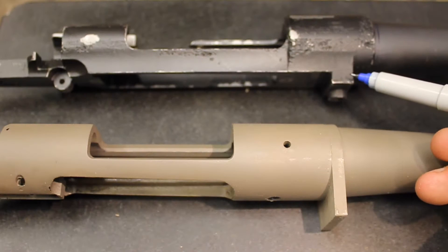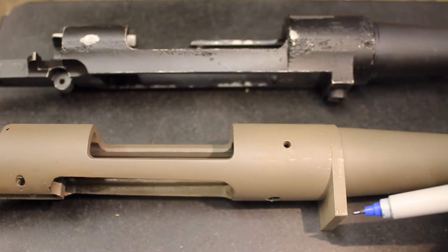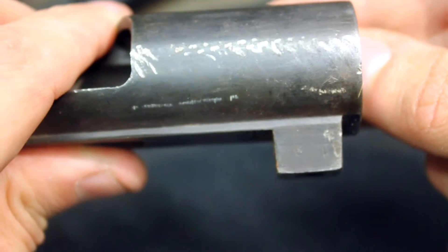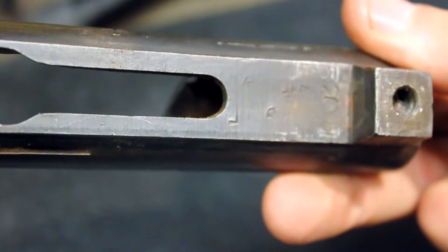Some rifles use an integral recoil lug, while others use a separate recoil lug. The advantages to an integral lug is that the lug is usually thicker and part of the rifle's action, adding a certain element of rigidity.